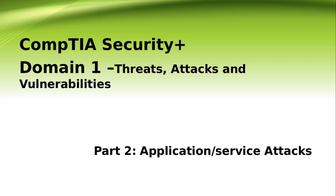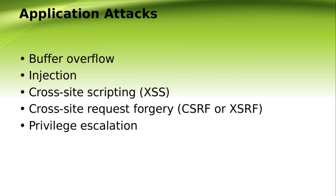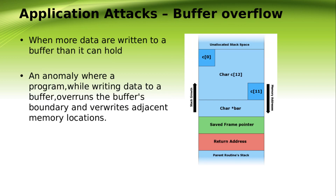Part two is a continuation — application service attacks. The types of attack covered include buffer overflow, injections, cross-site scripting, cross-site request forgery, and privilege escalation. We are going to cover these application attacks.